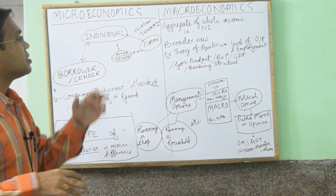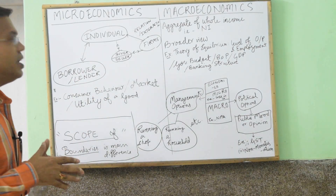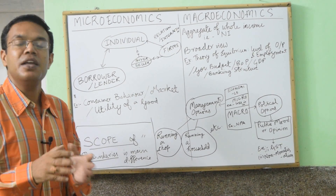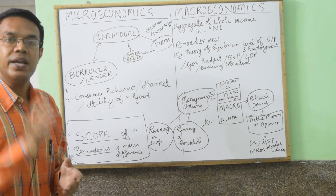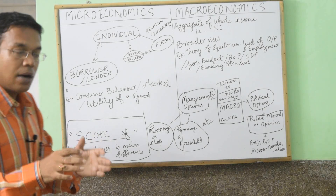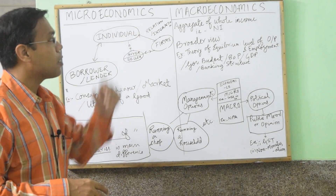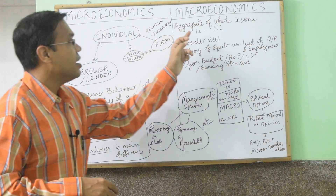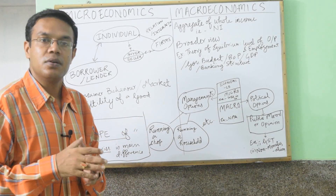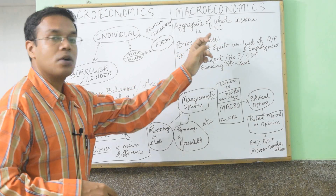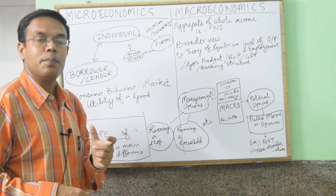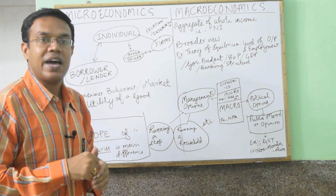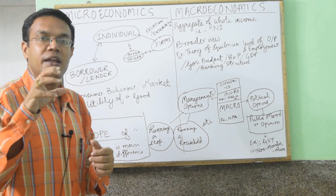Now we come to macroeconomics. Macroeconomics can be defined as an aggregate of all aspirations, an aggregate of all economic building blocks of an economy. In microeconomics we deal with an individual, a household, a company, a firm. But in macroeconomics, macro means we are considering something very big — the aggregate of whole income of a nation or geographical area, for example national income. Macroeconomics is a broader view and takes into consideration the major forces dominating the economy of a nation.